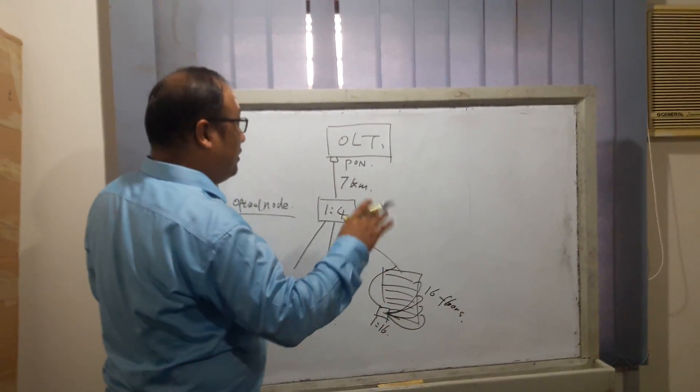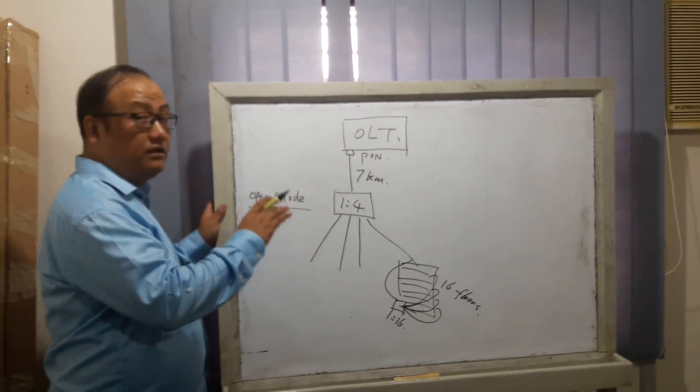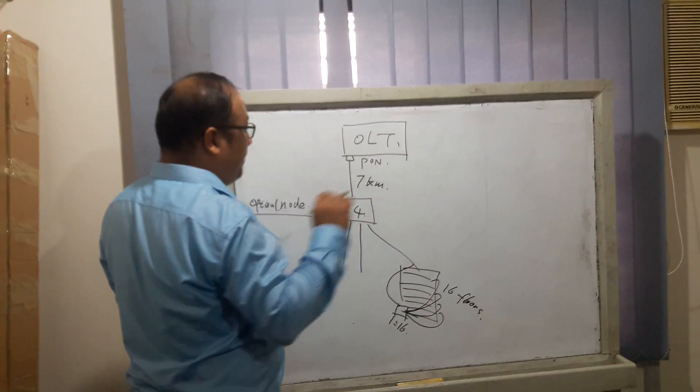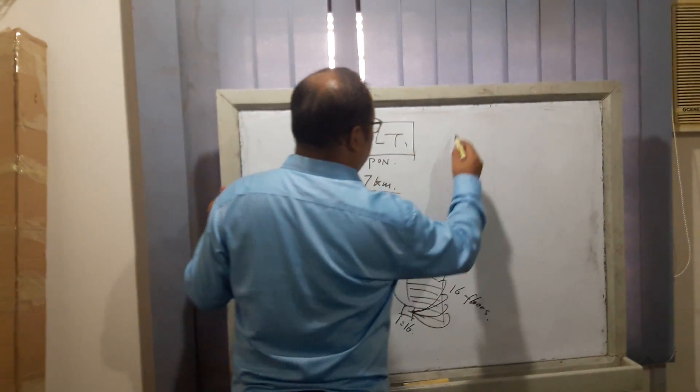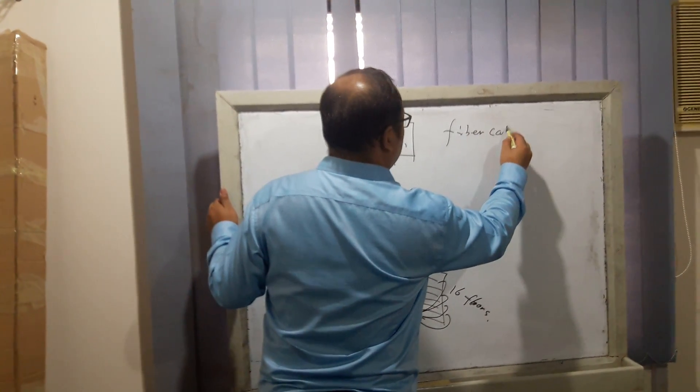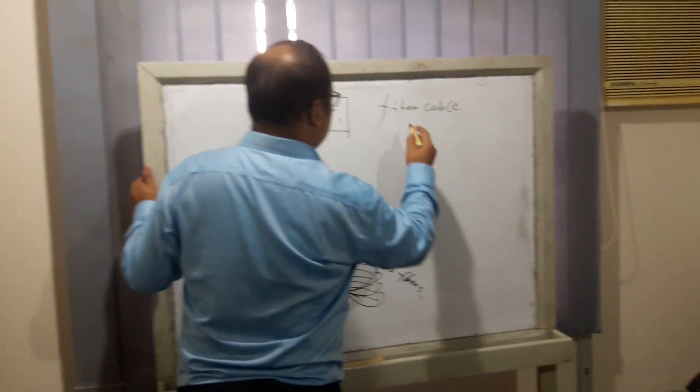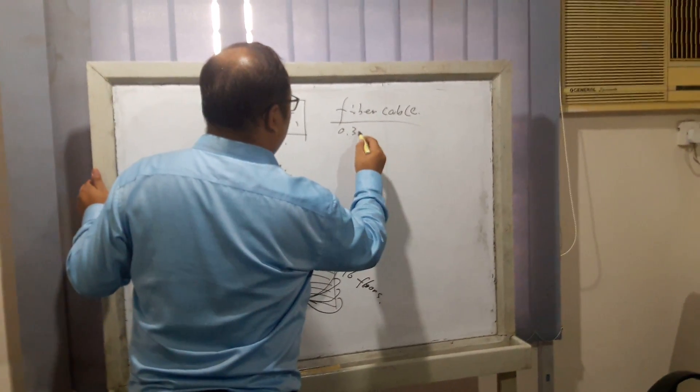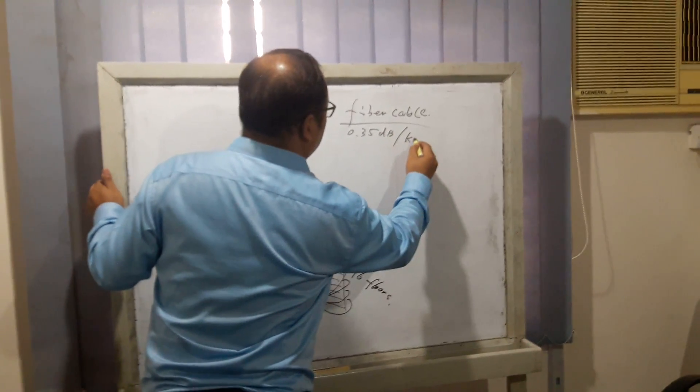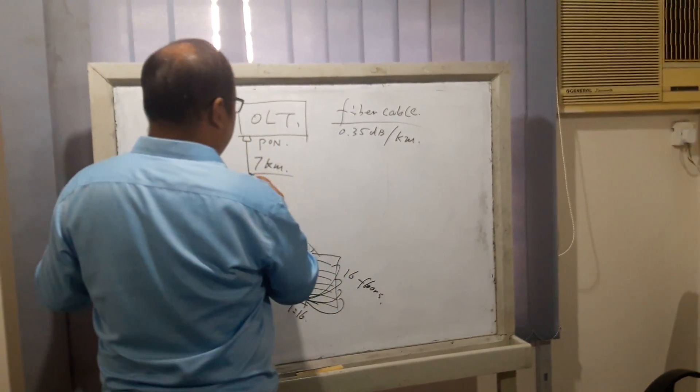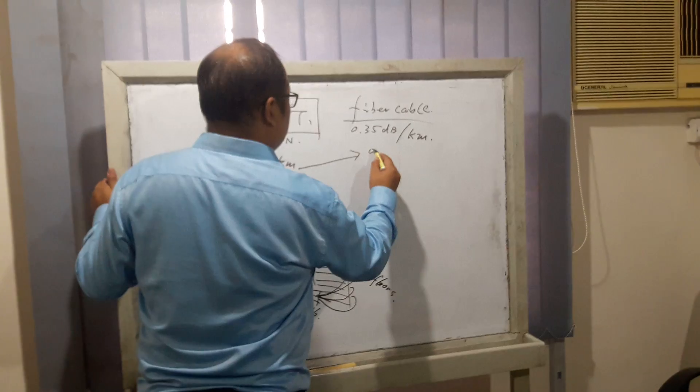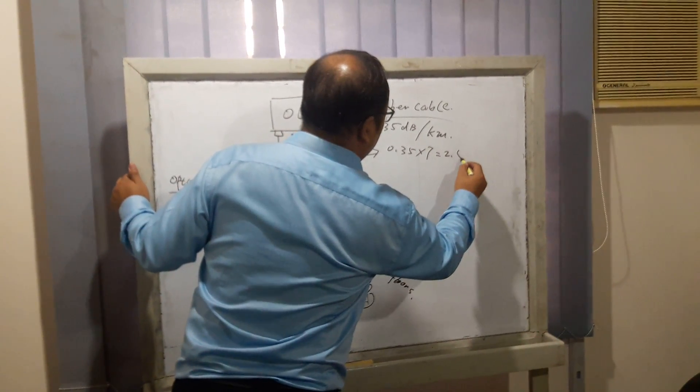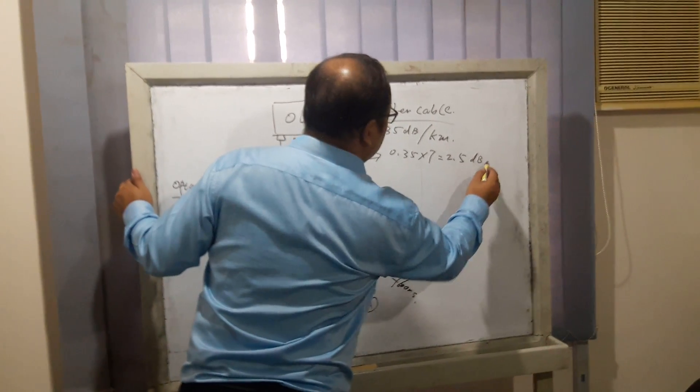Now we will calculate the attenuation of the whole distribution system. The first part is the fiber cable. As we know, the fiber cable loss is about 0.35 dB per kilometer, so 7 km is about 2.5 dB loss.